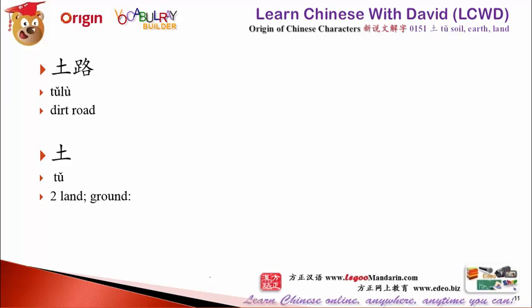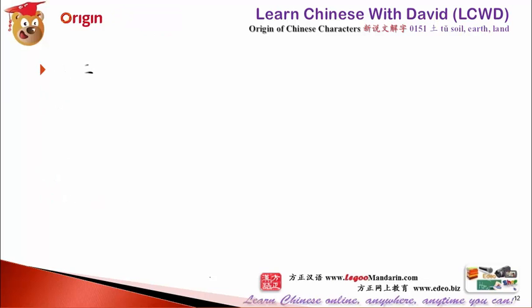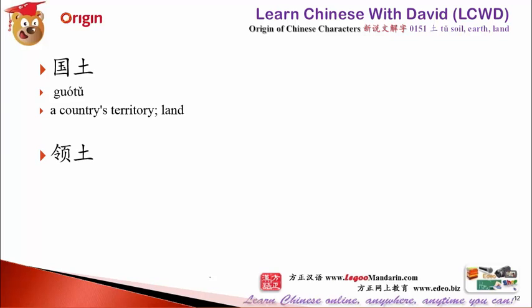土's second meaning is land or ground. 国土 — country and land — means a country's territory, national land. 领土 — 领 means to lead, to take, to occupy — the land that belongs to your country. Territory, domain. 领土.